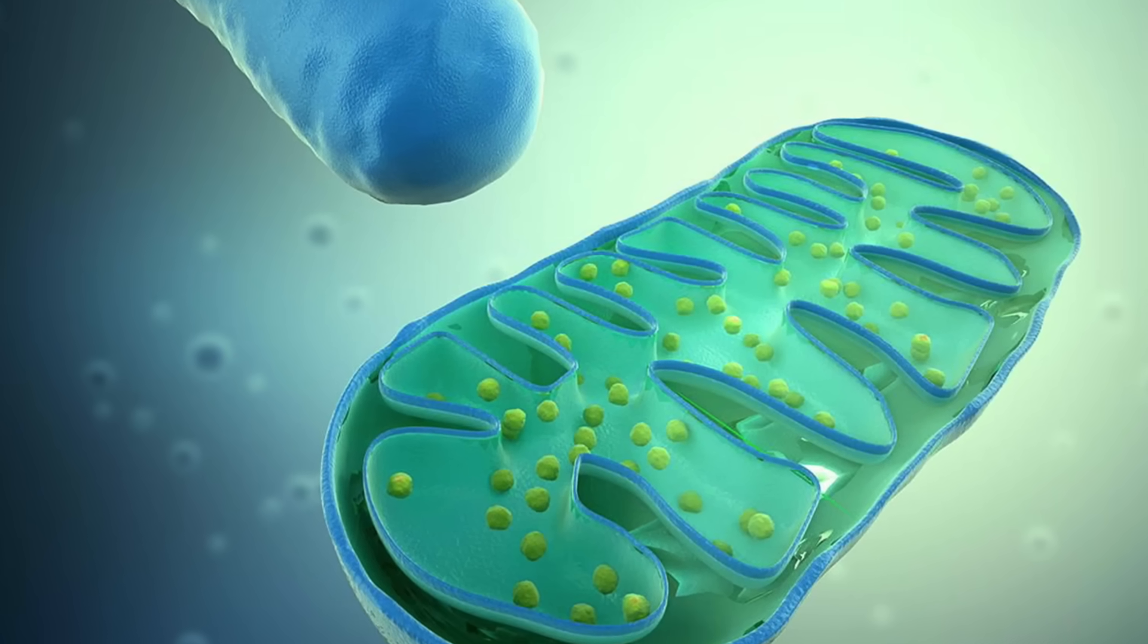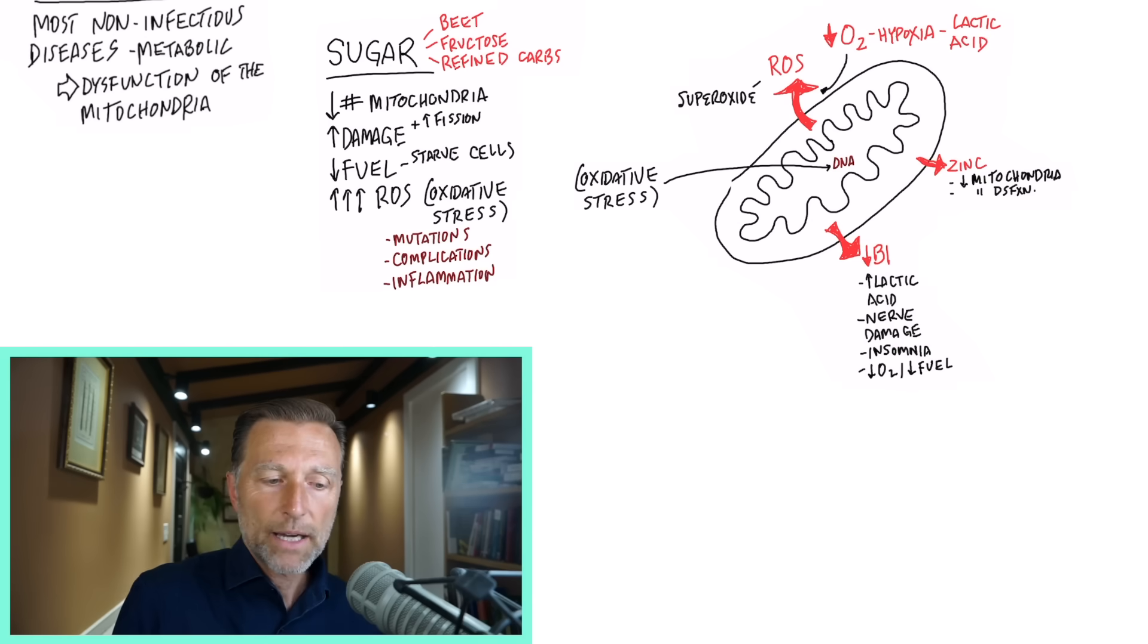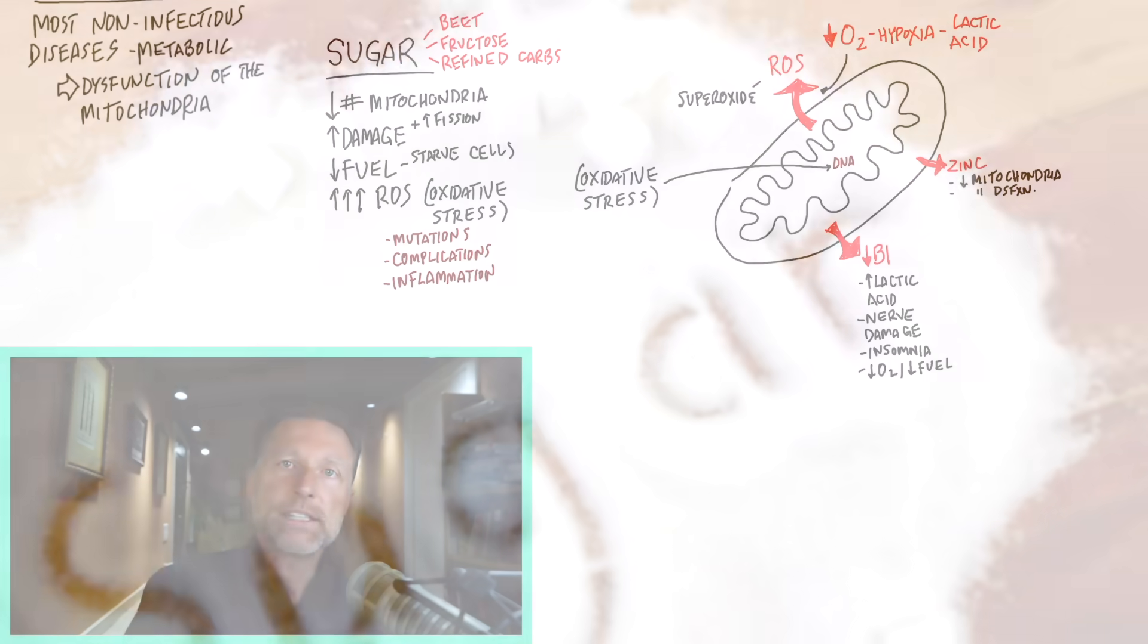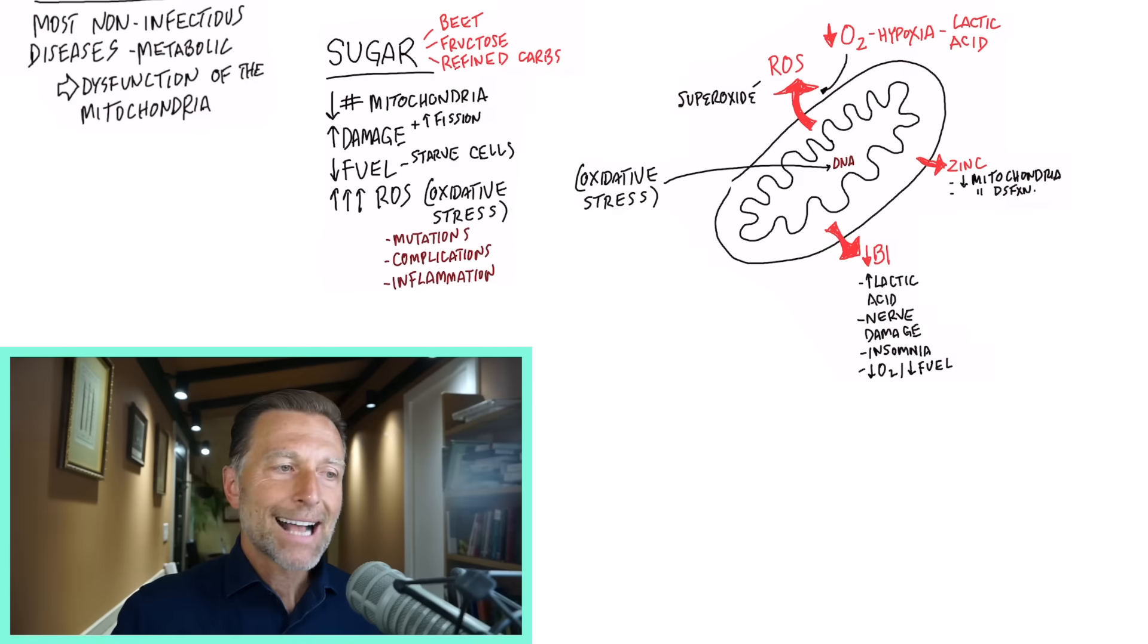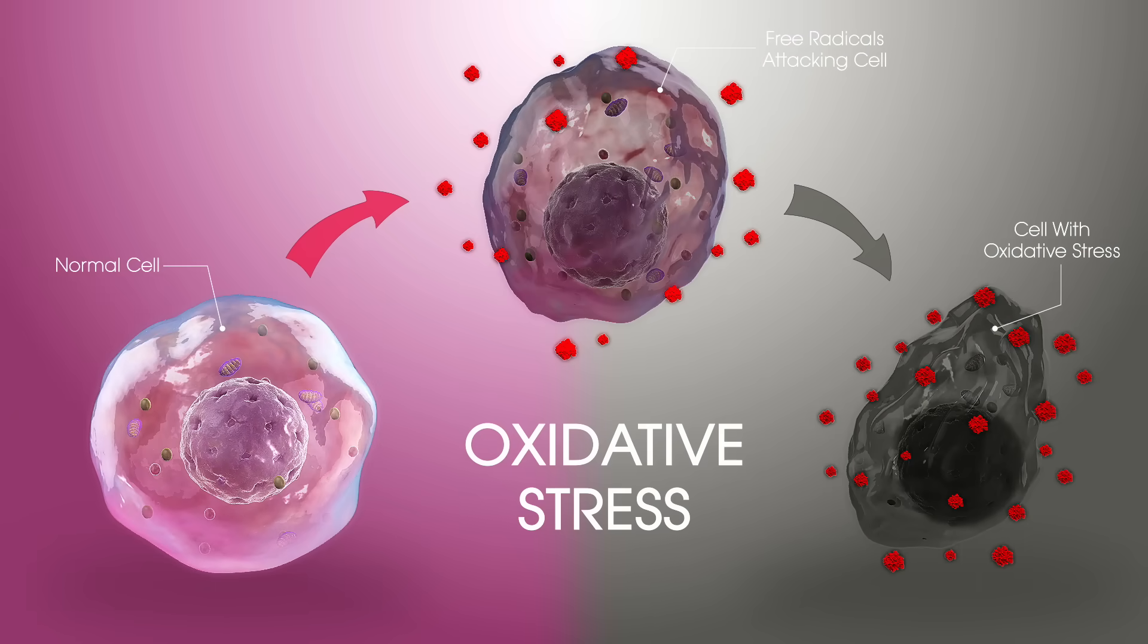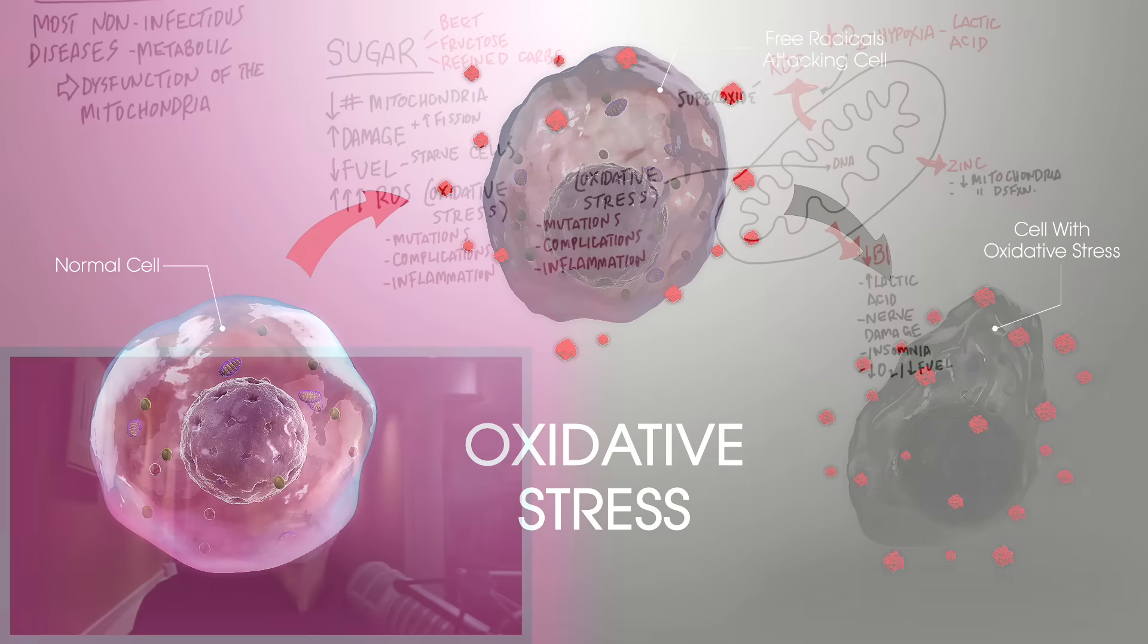And what happens in cancer is the cell, as a survival mechanism, gets its fuel outside the mitochondria in other places, a different pathway. It's very rudimentary, very crude, and there's not much energy generated from that. And so the cancer cells have to compensate by hogging up as much fuel as they can. And sugar is one of the fuels that they go after hardcore. But there's a tremendous amount of oxidative stress produced from these damaged mitochondria.